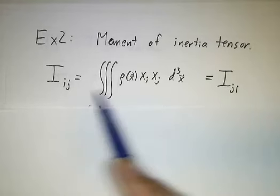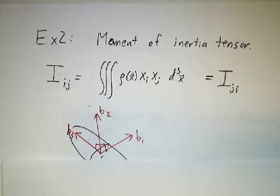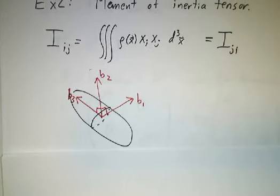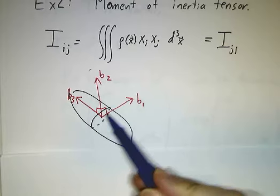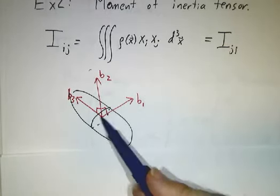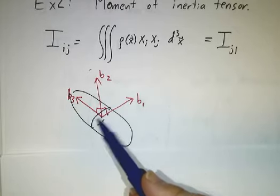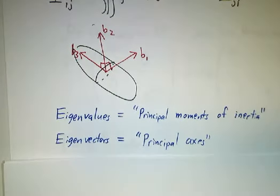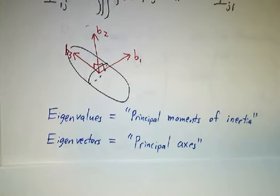And that's a symmetric matrix, and that means that its eigenvectors are orthogonal, and its eigenvalues are real. So we call the directions of the eigenvectors the principal axes. These are the axes on which you have simple rotations. And the eigenvalues are the principal moments of inertia.